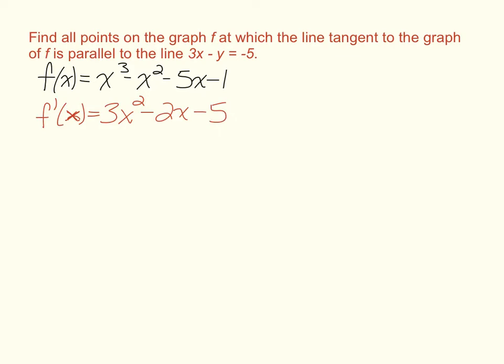Now that we have this function, we can find the slope of any tangent line that we could need on this graph. But we need a very specific tangent line. We need a tangent line that is parallel to the line 3x minus y equals negative 5. So if it needs to be parallel, then we need to find the slope of this line so we can figure out what slope we need for our tangent lines.